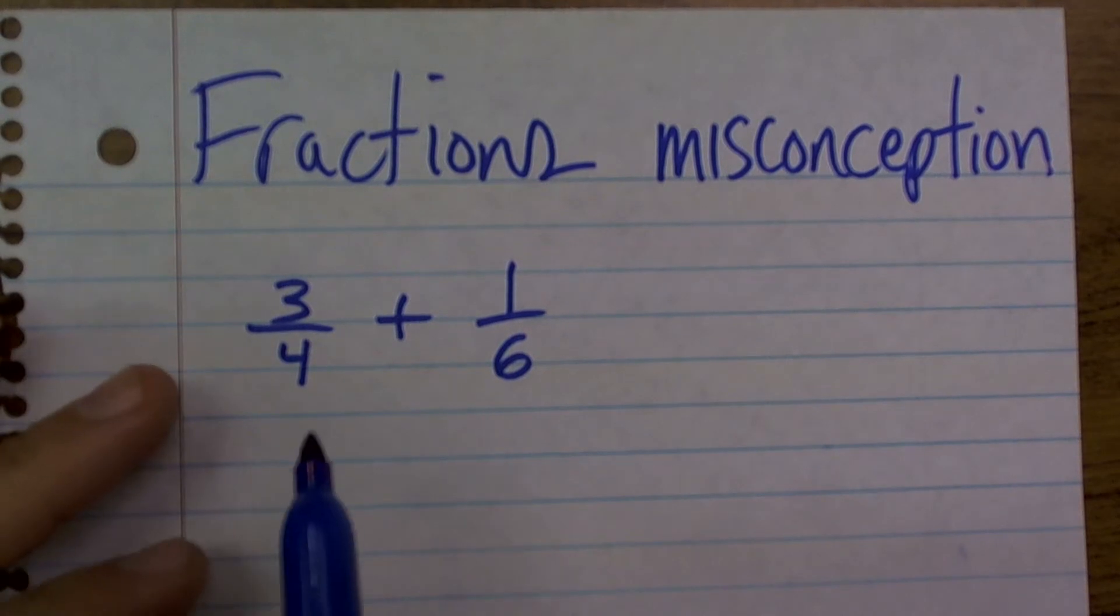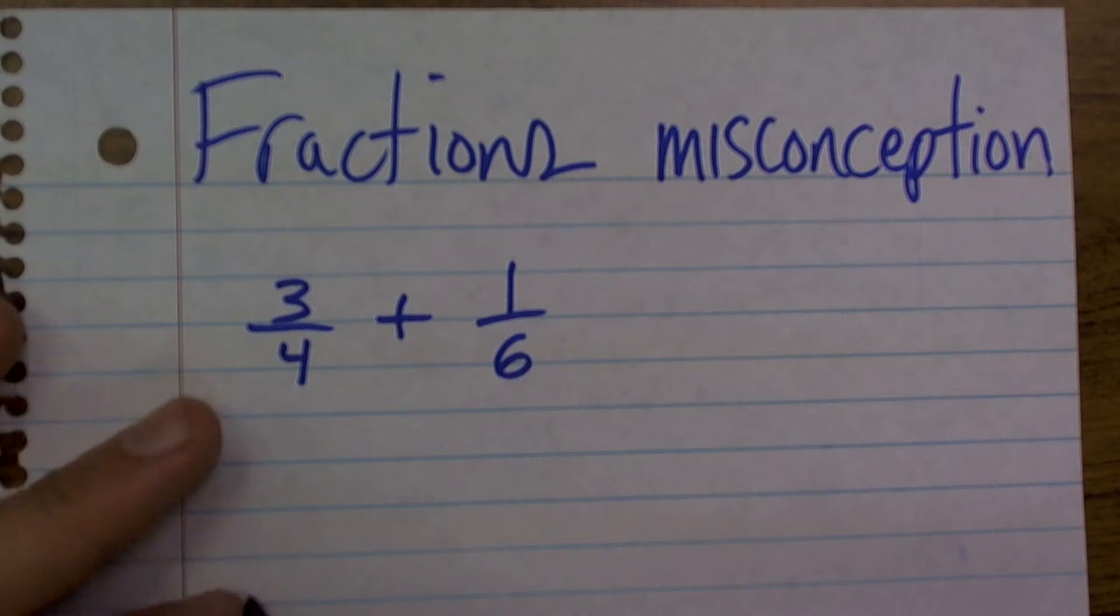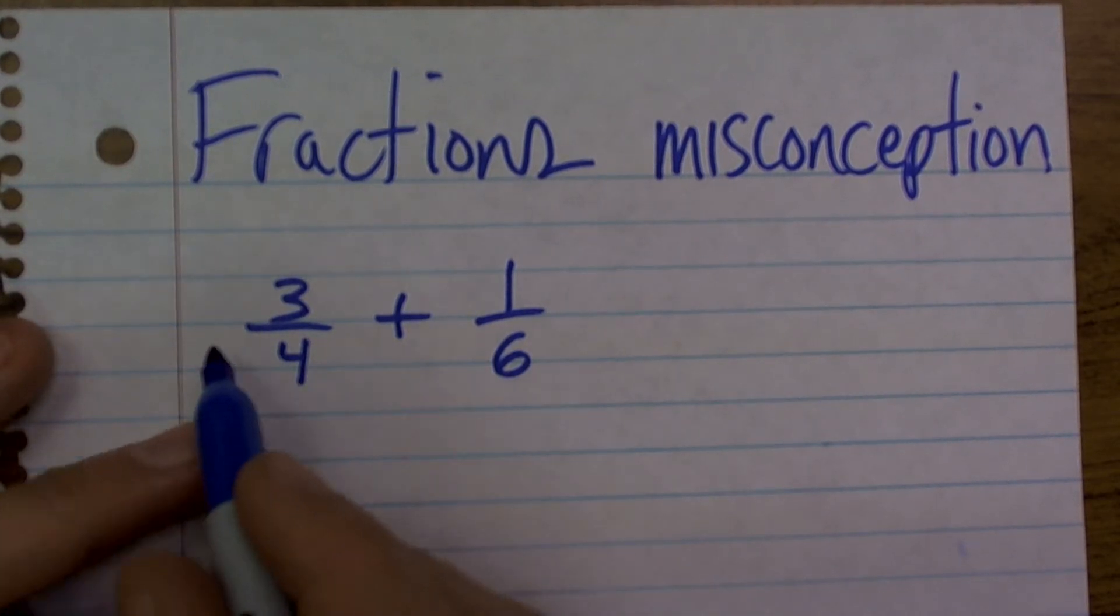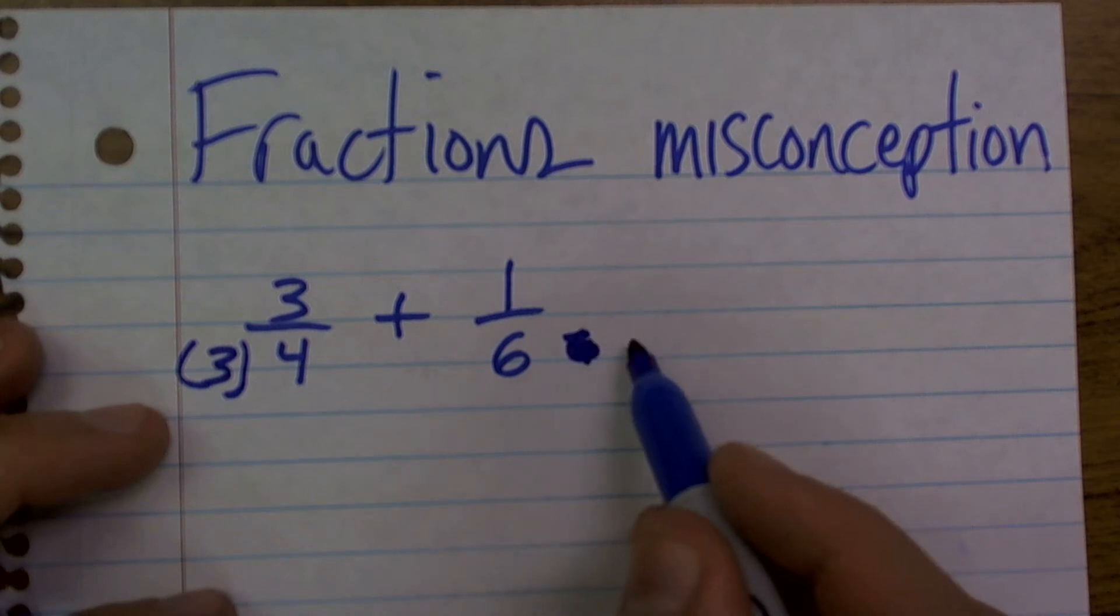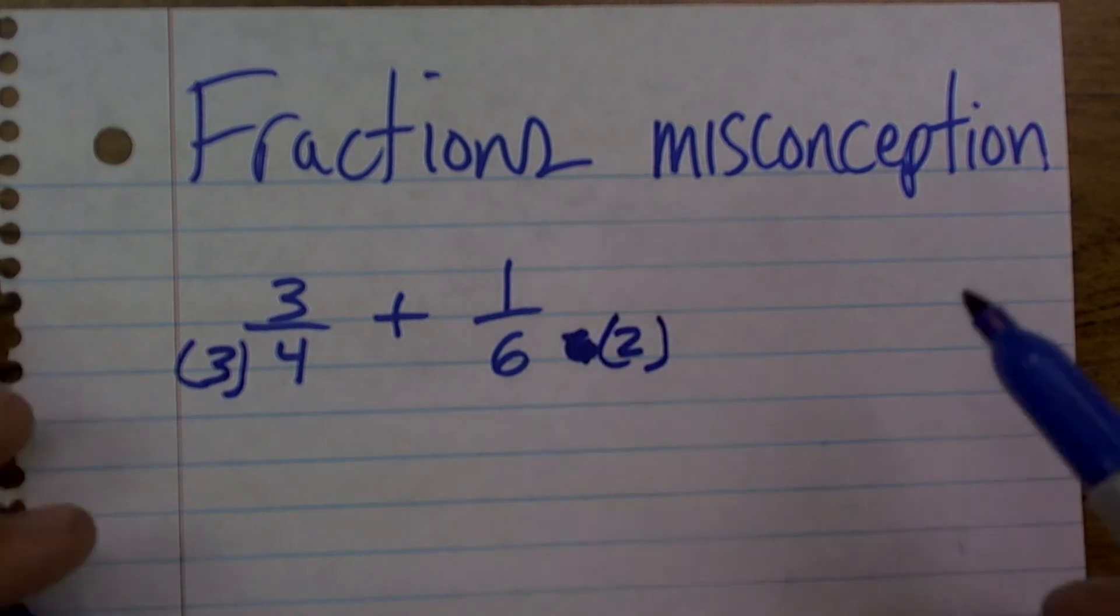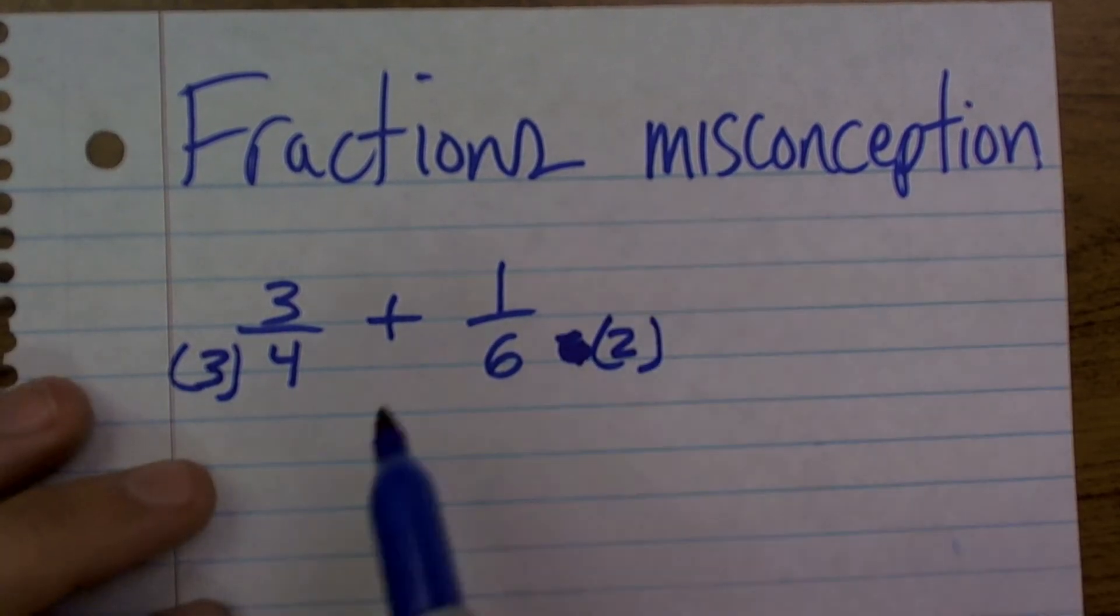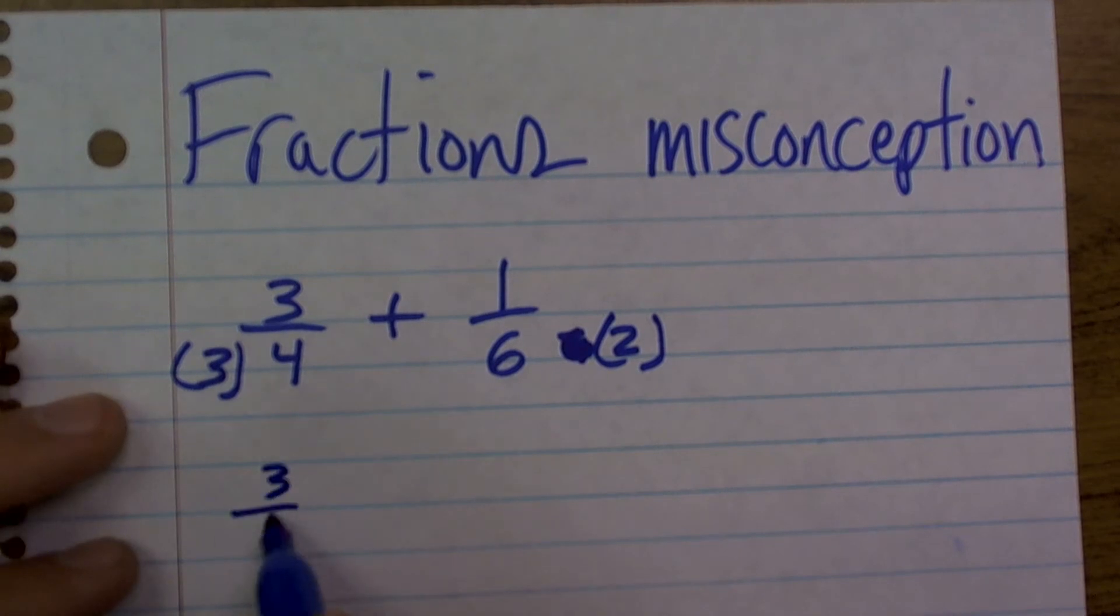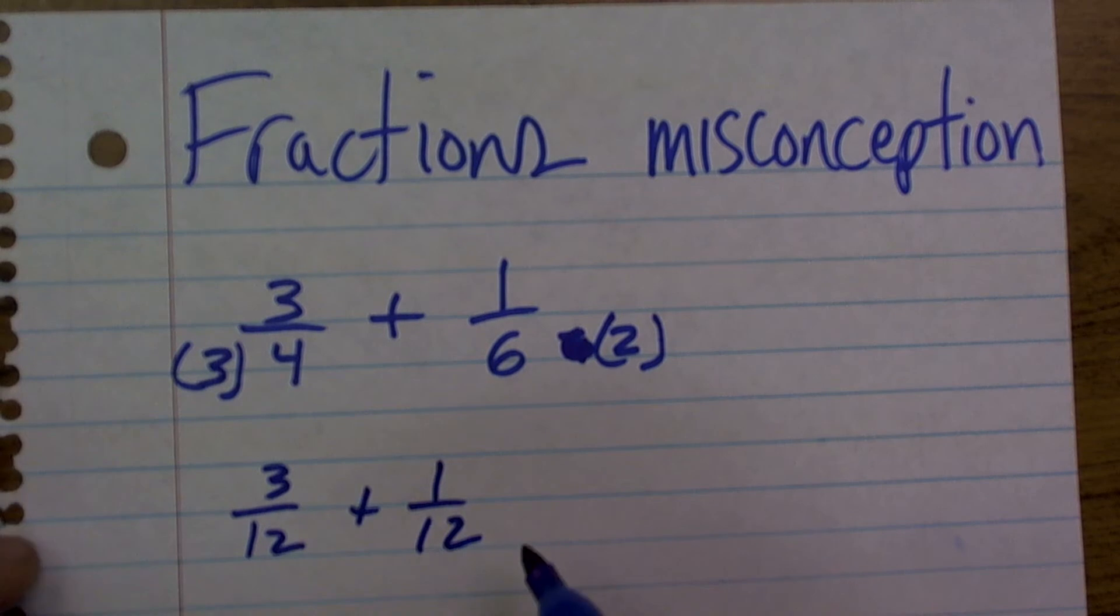So what they do is they figure out their common denominator, and for this one our common denominator is 12. So therefore I'm going to multiply my 4 times 3 and my 6 times 2. Well, what they forget is they forget to multiply the numerators by that same number, making equivalent fractions. So what they end up having is 3 twelfths plus 1 twelfth.